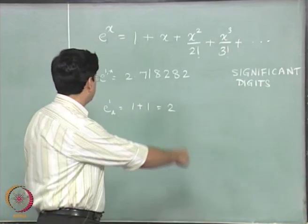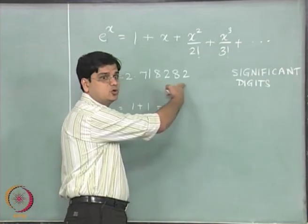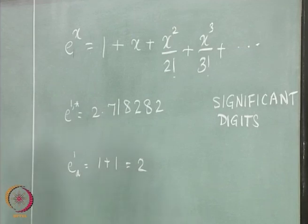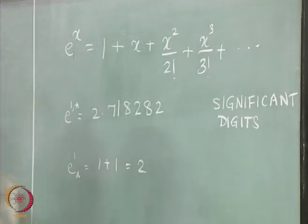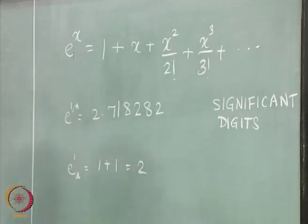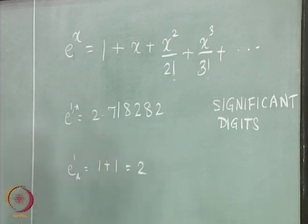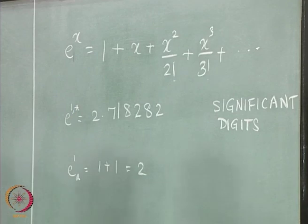If you see the difference between the true value of e to the power 1 and the approximate value of e to the power 1, it is going to be significant when you are just going to include only the first term over here. This difference between the two is...